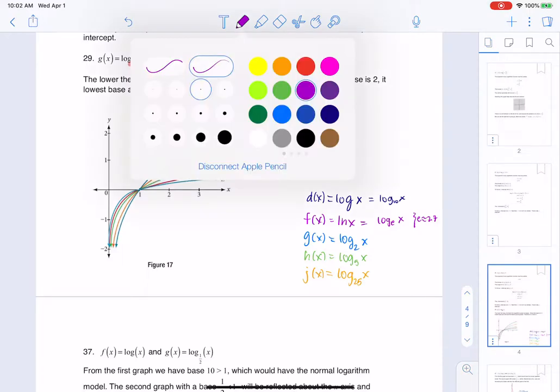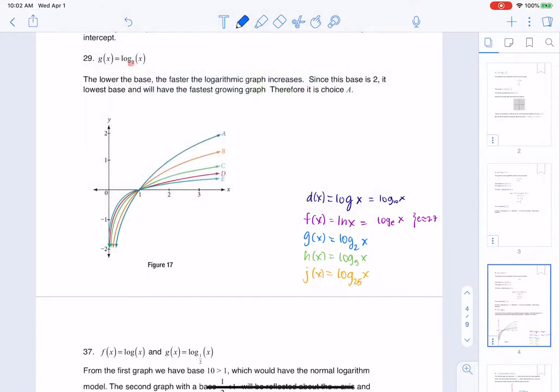So if we look at this right now, I can see that log base 2 has the smallest base, because our bases are respectively, we've got 10, E, 2, 5, and 25, and so 2 is that smallest number.